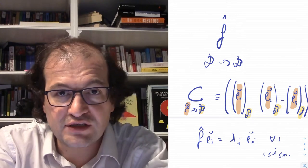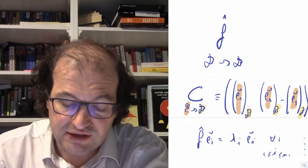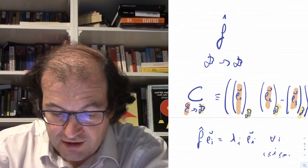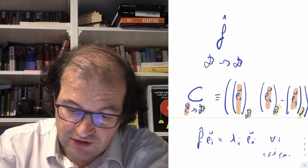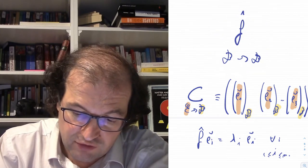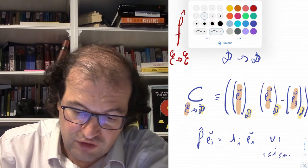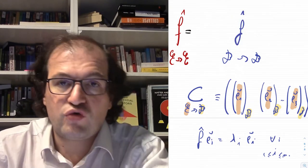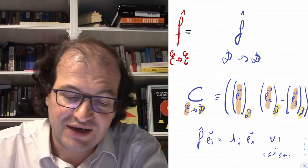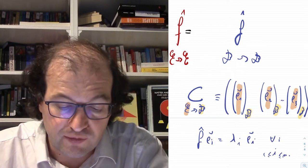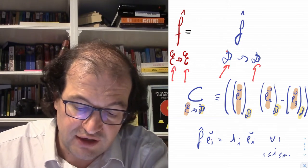We make the matrix by putting the components of each eigenvector in the canonical basis as columns. We can then use this change-of-basis matrix to re-express the function in the eigenvector basis. The transformation is: F expressed in basis E equals C⁻¹·F·C, where C is the eigenvector matrix. Going from basis E to B and back gives us the diagonalized form.